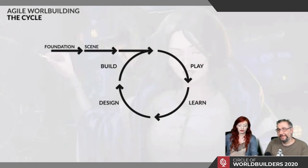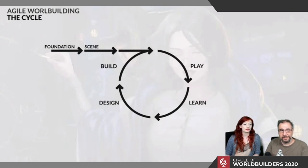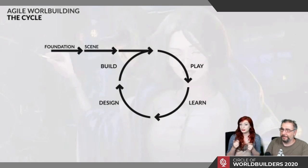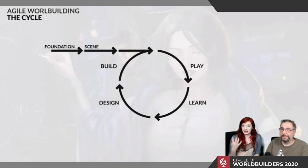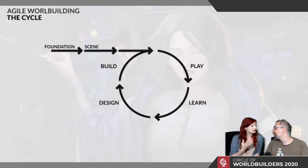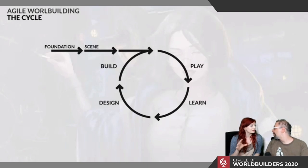This is the Agile World Building Cycle. The whole point is to build only what you need only when you need it. Yesterday we unpacked how to create the foundation for your world and how to set the scene — parts of this process you only need to do once. Today we're going into the circular part of the cycle: Play, Learn, Design, and Build.